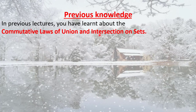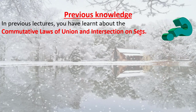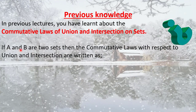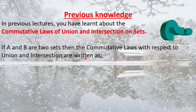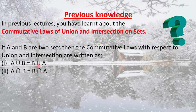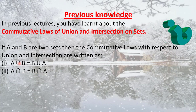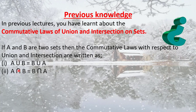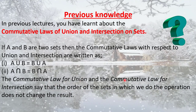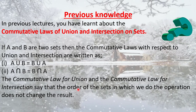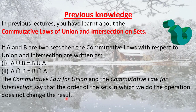Before starting the lecture, let's recall the previous knowledge. In previous lectures, you learned about the commutative laws of union and intersection on sets. If A and B are two sets, then the commutative laws are: A union B is equal to B union A, and A intersection B is equal to B intersection A. These laws say that the order of the sets in which we do the operation does not change the result.